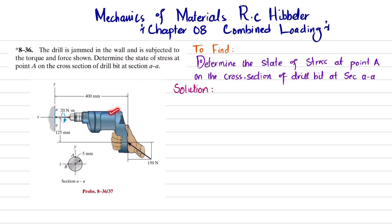You can see this is the drill bit. This is the force that is acting at an angle; the magnitude of force is 150 Newton. The drill is jammed in the wall and a torque T of 20 Newton-meter is applied. You have to find the state of stress at point A on the cross section of the drill bit.